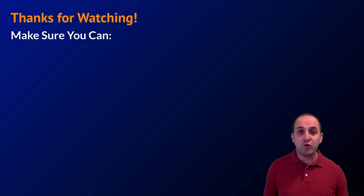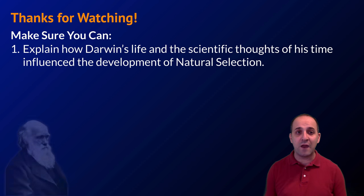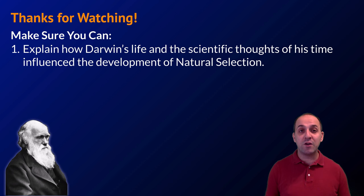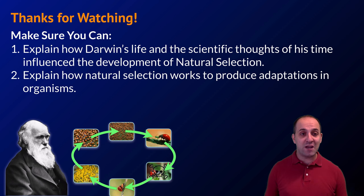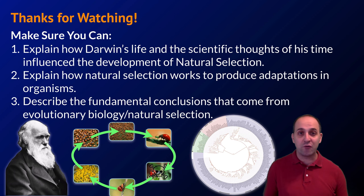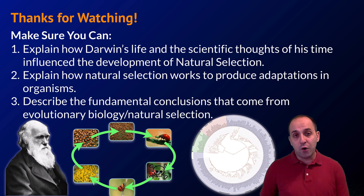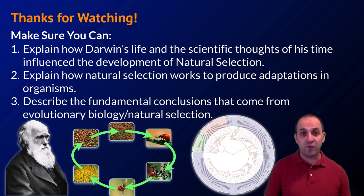So that wraps it up for our introduction to evolutionary biology. Make sure you can explain how Darwin's life and the scientific thoughts of his time contributed to the development of the theory of natural selection. Make sure you can explain how natural selection works to produce adaptations in organisms and populations. And make sure you can describe the fundamental conclusions that come from evolutionary biology and natural selection. If you can do those things, you're doing great. If not, take a moment and write down any questions you have so that you can get answers as you go forward in your studies.